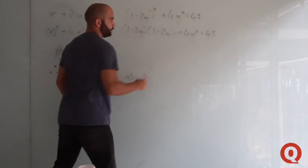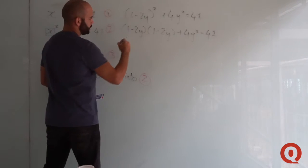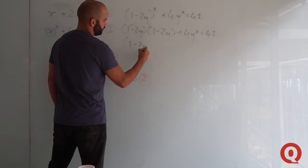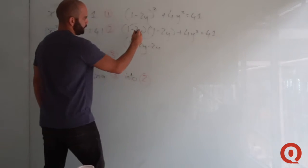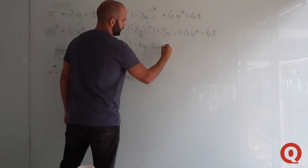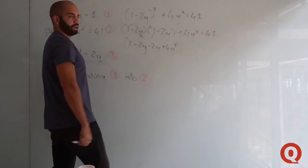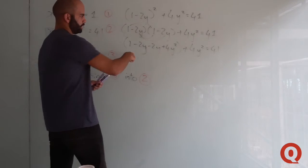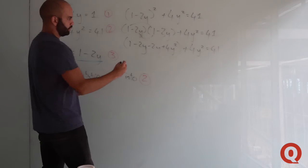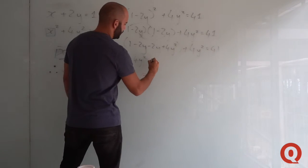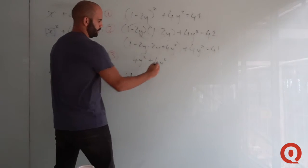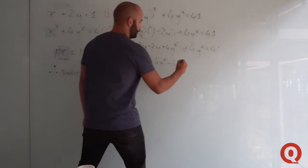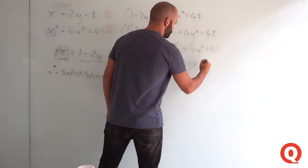Let's carry on with this working. The result of this multiplication gives 1 minus 2y minus 2y, and both terms multiplied by each other give 4y squared, plus 4y squared equals 41. So that's 8y squared minus 4y plus 1 equals 41.